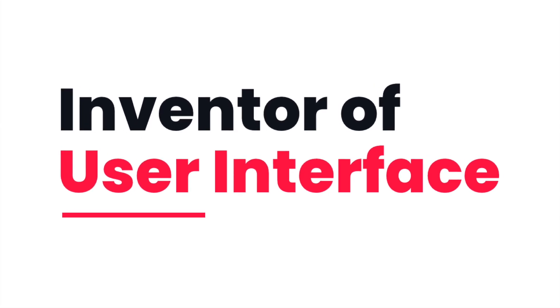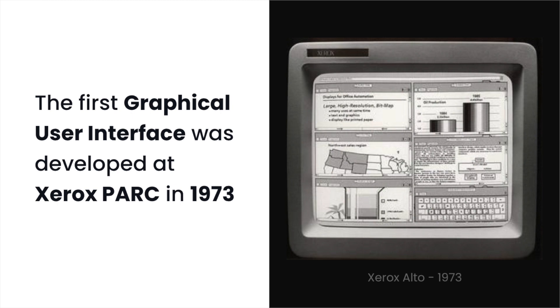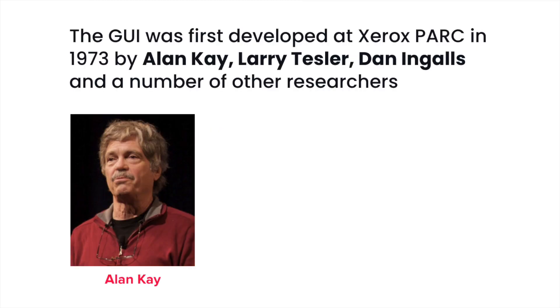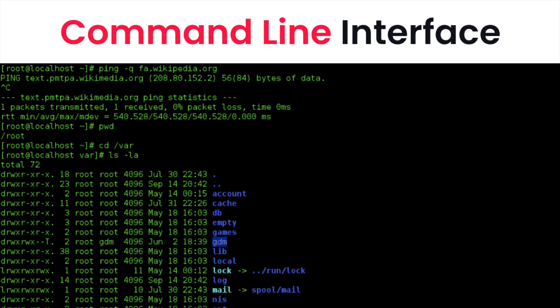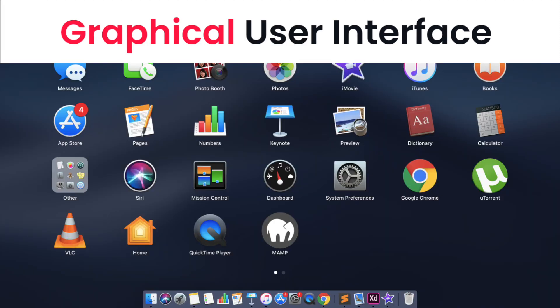Inventor of user interface: The first graphical user interface was developed in 1973 at Xerox PARC by Alan Kay, Larry Tesler, Dan Engels, and a number of other researchers. Before this, we used the command line user interface, where we had to write many lines of code to achieve a simple task. But in graphical user interface, through a simple and easy way, we can achieve any task.